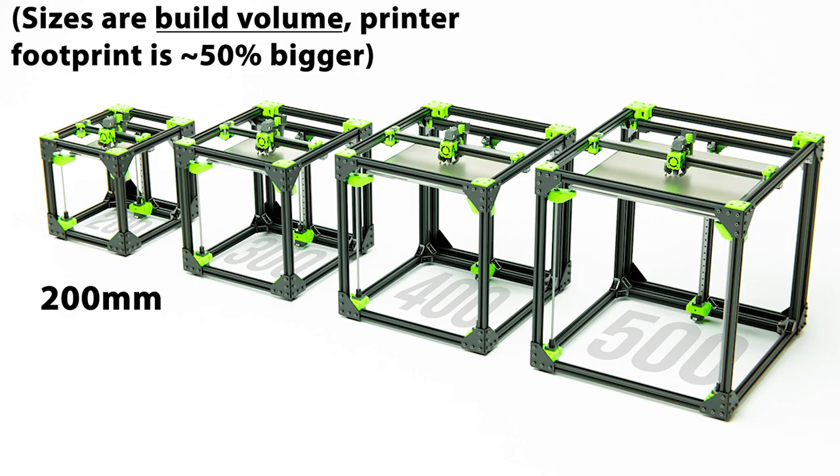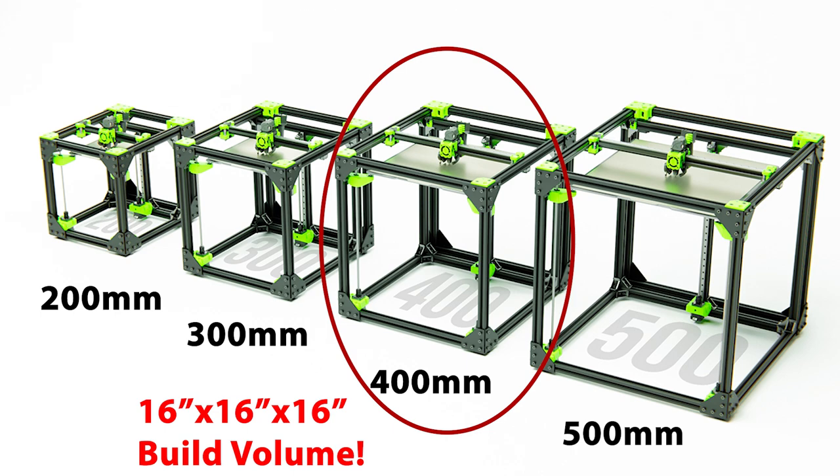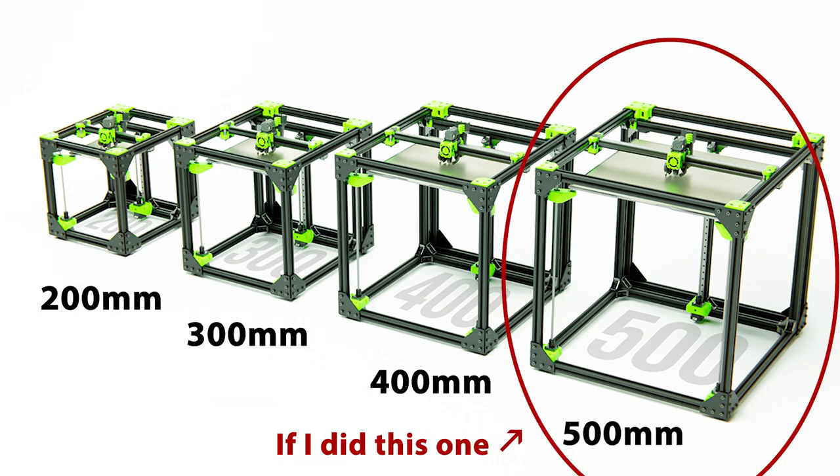It comes in four different sizes, from 200mm cubed to 500mm cubed. I picked the 400mm cubed, which is about a 16-inch by 16-inch by 16-inch build volume. I wanted the large build volume, but the bigger you go, the more issues you're going to have with rigidity and vibrations. I also need to be able to fit it through a standard US door. And after taking some measurements and comparing to the CAD, I would be able to get it through my doors if I took the hinges off.